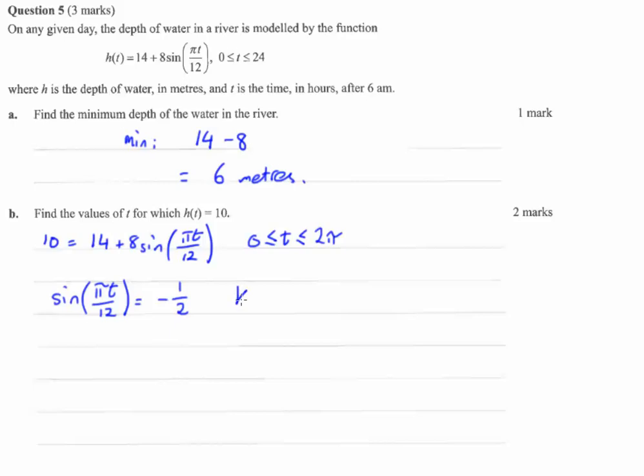Now we need to find the key angle, or the fundamental angle, or the first quadrant angle. Sine of something gives you 1 half. Ignore the sign for now. We know that quantity is going to be pi on 6.